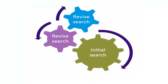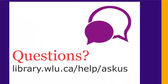As you can see, searching for scholarly articles is not a simple process. It involves multiple attempts and different strategies, taking cues from your results each time to improve your search the next time. Having a search plan and some strategies for revising your searches will help you find sources more effectively. If you have any questions, please ask us at library.wlu.ca/help/ask-us.